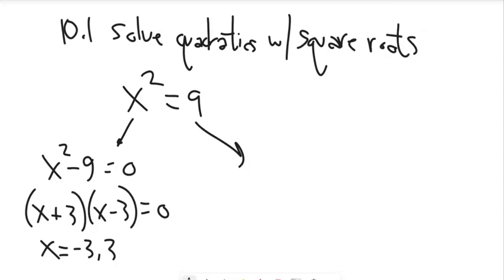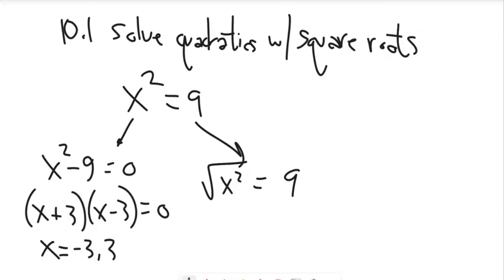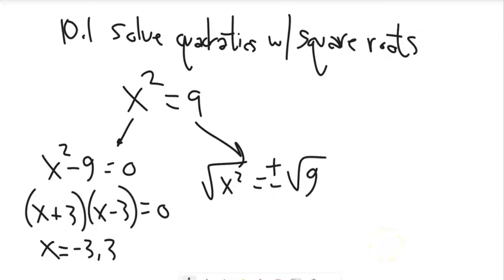Another way I can do this one: what squared gives me 9? 3 and negative 3. So we can use square roots. We have this equation and we square root both sides. Notice we are bringing the square root into this equation — it is our doing. So when we bring it in to undo a square, we want to remember that squares mask negatives. We bring in a plus or minus with it. This is the biggest mistake I see people make when doing this type of problem — forgetting the plus or minus.